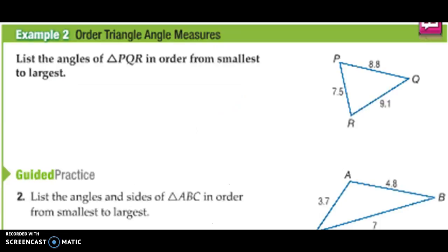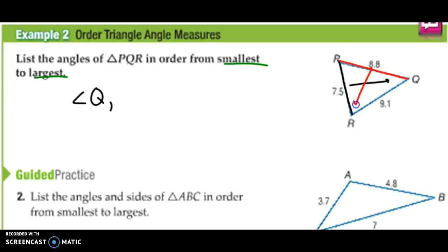Let's list all the angles of triangle PQR in order from smallest to largest. To do that, we first look at the sides in order from smallest to largest and then use the opposite angles. The smallest side is PR, so its opposite angle Q is the smallest angle. The next biggest side is PQ, so its opposite angle R is next. Finally, the longest side is RQ, and its corresponding angle P is the largest. So the angles in order from smallest to largest are: angle Q, angle R, angle P.